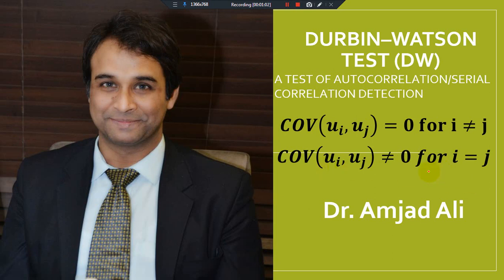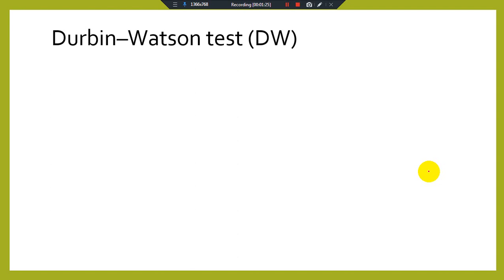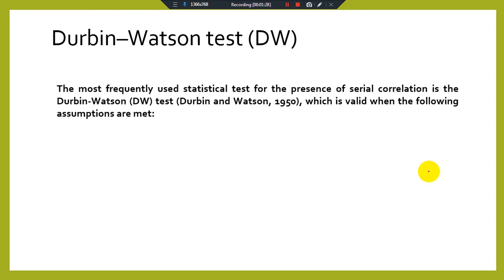This situation is known as autocorrelation. The concept, graphical interpretation, and definition of autocorrelation have been discussed in a separate video. In this video, we will learn the detection of autocorrelation using the Durbin-Watson test. The DW test is the most frequently used statistical test for the presence of serial correlation.